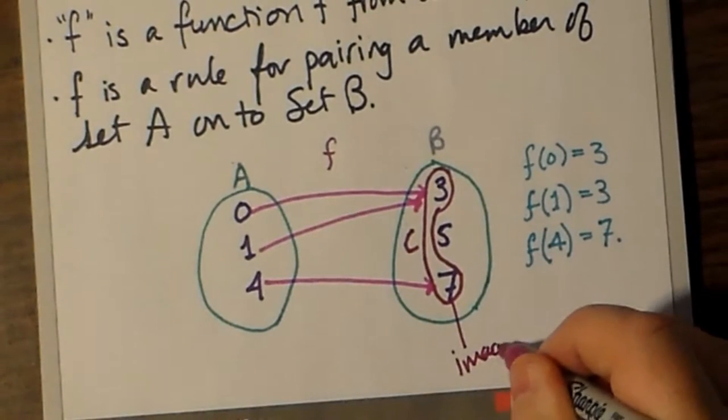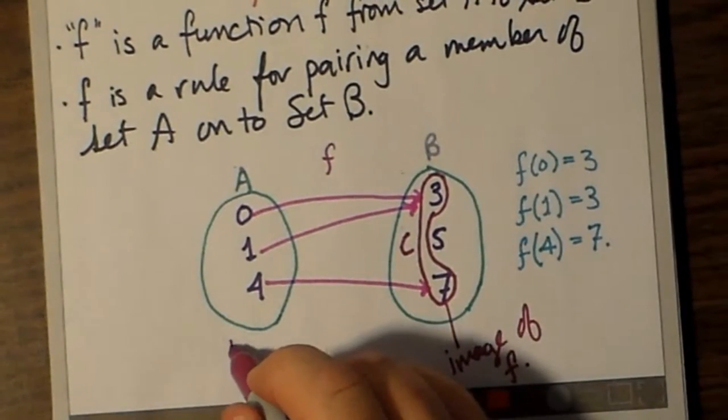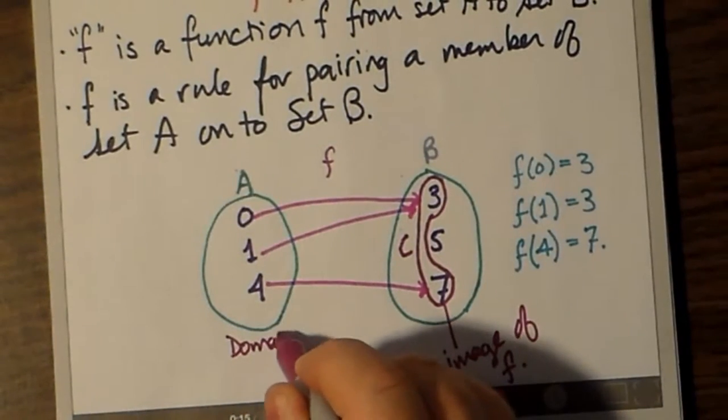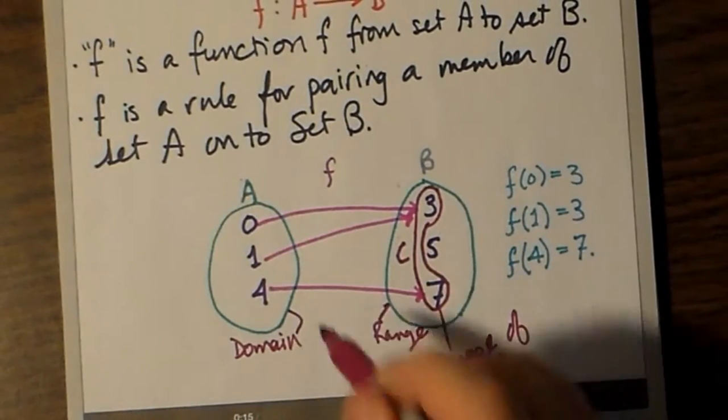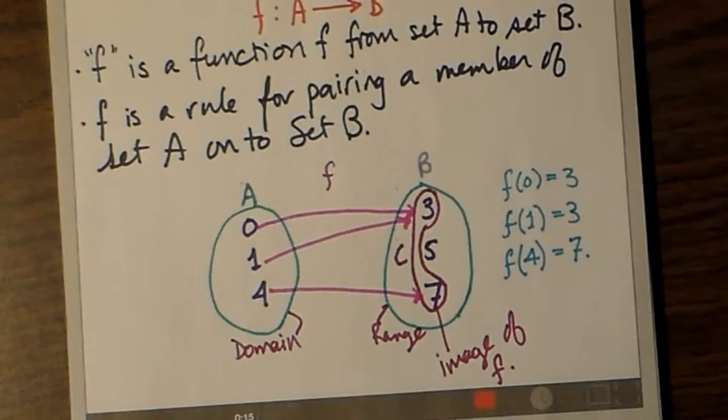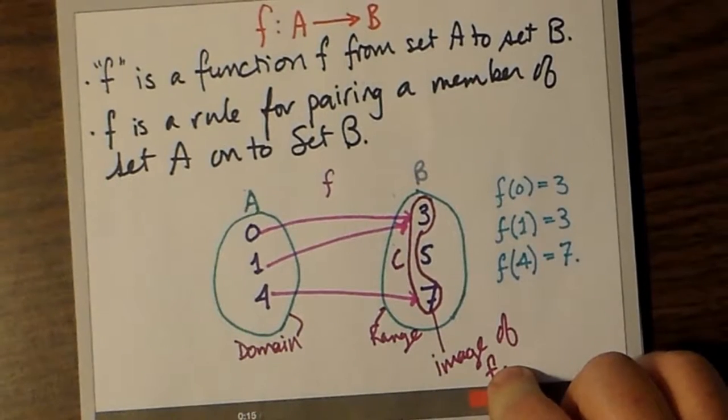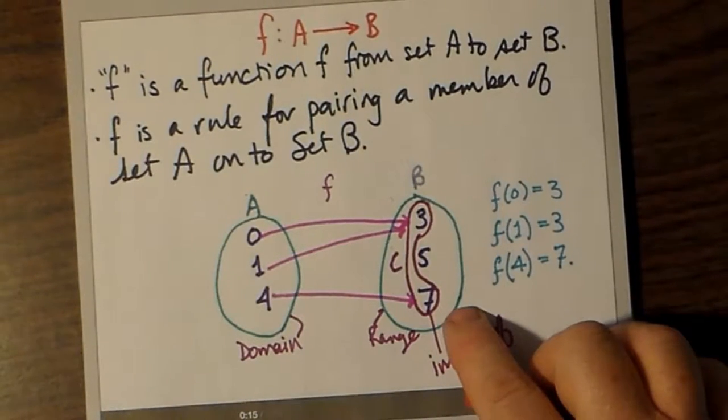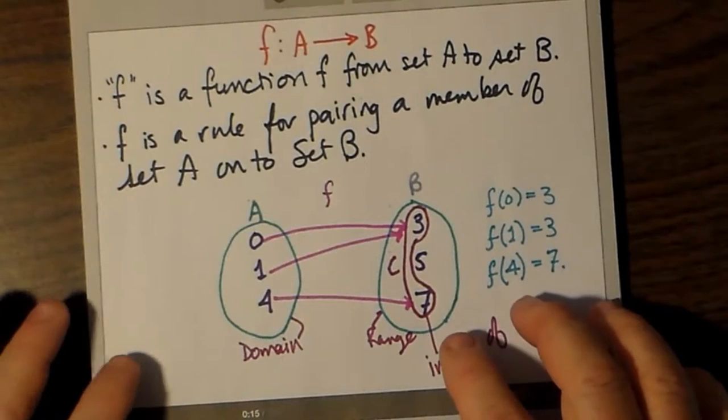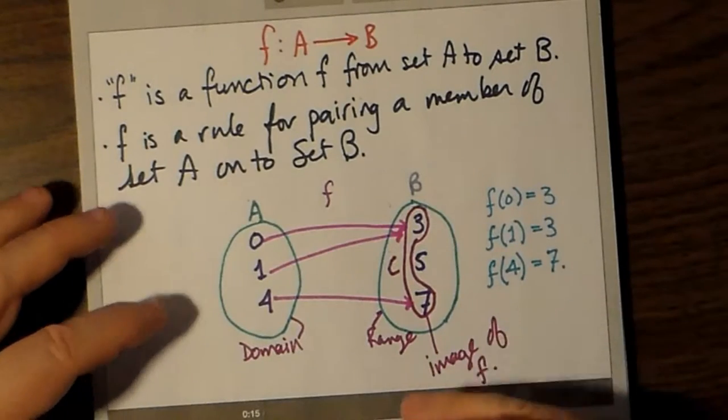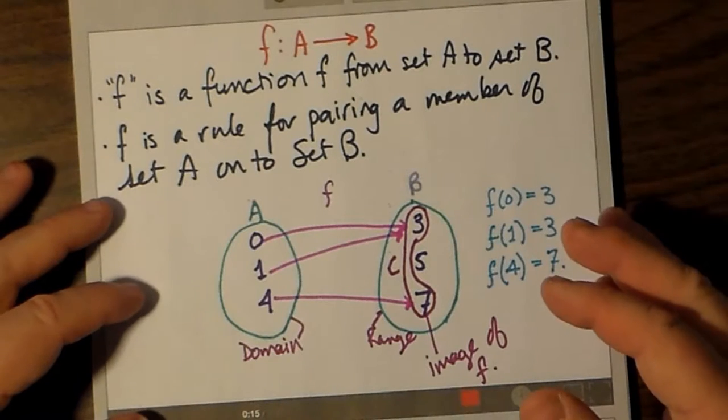We could call that set C, and this subset actually has a new name. We can call that the image of f, whereas set B is the range of f. Set A is the domain of f and doesn't have an alternate name. If the image and range are the same set, in other words no elements left out, we call that an onto function. But where the image and range are not the same set of numbers, that's called an into function, or a function which is not onto.